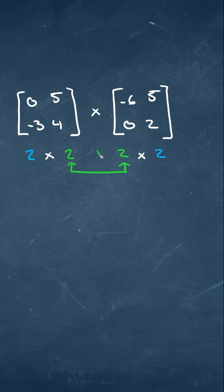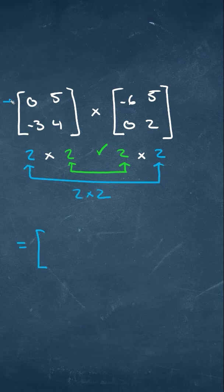So we have a 2 by 2. The outside numbers will denote what the size of the new matrix is going to be, which is 2 by 2. What we'll do is multiply the first matrix by the row and the second matrix by the column.